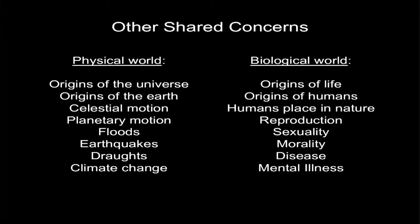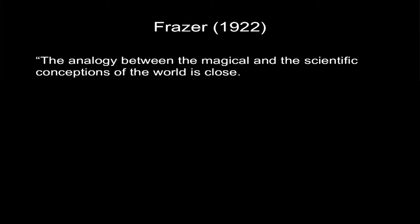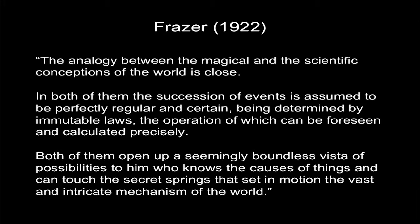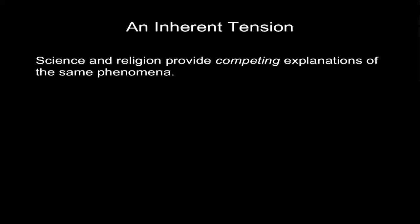This similarity in the explanatory goals of science and religion has been noted by many people for a long time. One of the first people to articulate this overlap very nicely was James Frazier in The Golden Bough, where he wrote: 'The analogy between the magical and the scientific conceptions of the world is close.' Throughout this talk I'm going to transition from religious beliefs to supernatural beliefs more generally. The analogy is quite close — in both of them, the succession of events is assumed to be perfectly regular and certain, being determined by immutable laws, the operation of which can be foreseen and calculated precisely. Both open up a seemingly boundless vista of possibilities to him who knows the causes of things and can touch the secret springs that set in motion the vast and intricate mechanisms of the world.